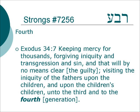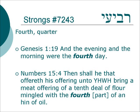The idea of the ordinal number of the fourth — first, second, third, fourth — also comes from this root Reva. Exodus 34:7 — Keeping mercy for thousands, forgiving iniquity and transgression and sin, and that will by no means clear the guilty, visiting the iniquity of the fathers upon the children and upon the children's children, unto the third and to the fourth generation. Reva is a related root, and it is also the ordinal number, the fourth. Genesis 1:19 — And the evening and the morning were the fourth day.